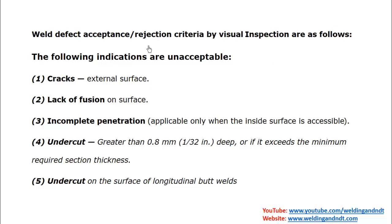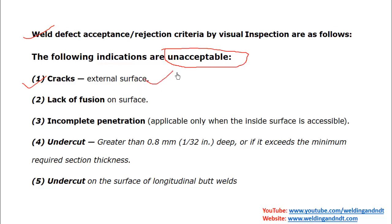Weld defect acceptance or rejection criteria by visual inspection is as follows. The code specifies which indications are unacceptable. First: any type of crack is unacceptable. During visual inspection you examine the external surface only, so any crack appearing on the external surface will be rejected.